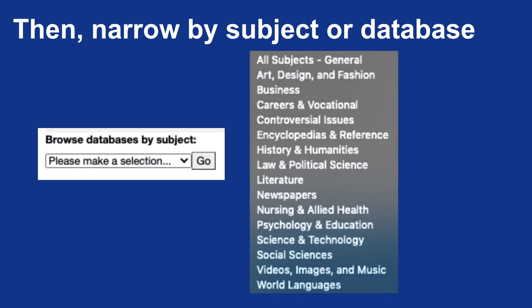In this example, you can see a range of subjects that move from art, design, and fashion, and business, to literature and newspapers, to videos, images, and music, and world languages. Choose the subject area that you'd be interested in, and make sure to click on the Go button in order to proceed.